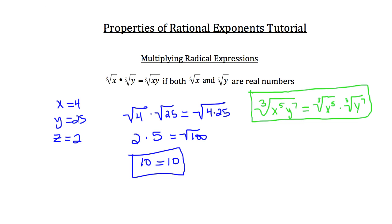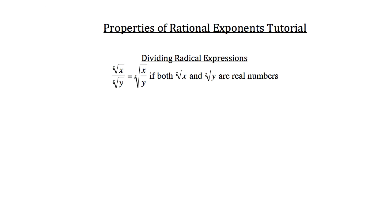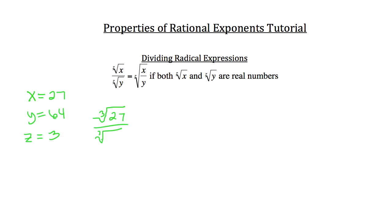Now let's talk about dividing radical expressions. If you had the z root of x divided by the z root of y, that would equal the z root of x over y, so long as both are real numbers. For this example, let's make x equal to 27, y equal to 64, and z equal to 3. So we have the cubed root of 27 divided by the cubed root of 64, which in theory should equal the cubed root of 27 over 64.